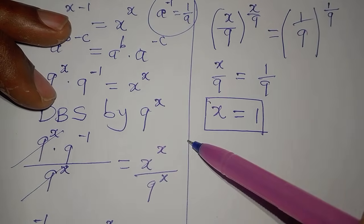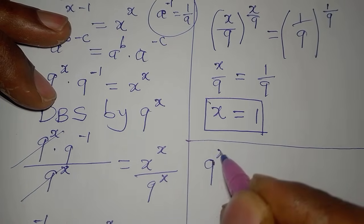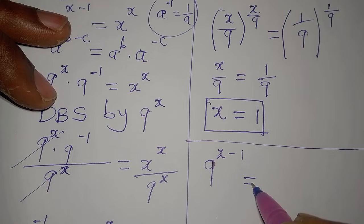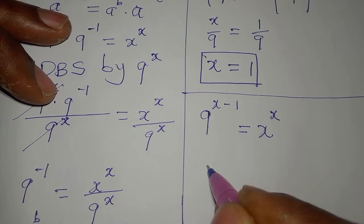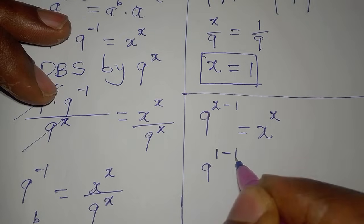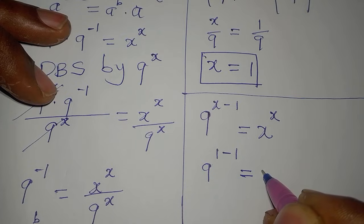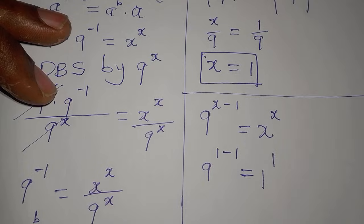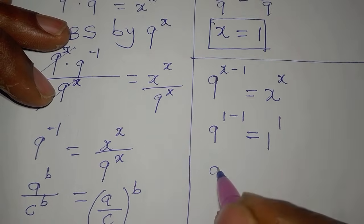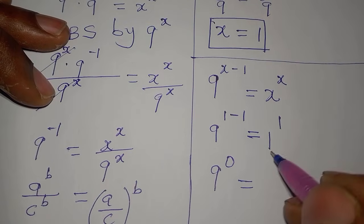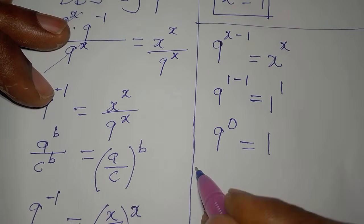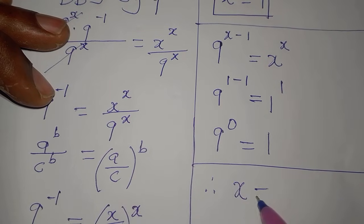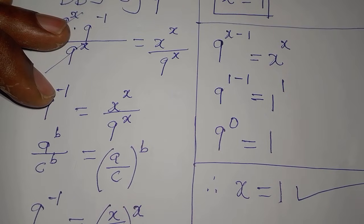Before the final conclusion, let's verify. The original equation is 9 to the power of x minus 1 equals x to the power of x. Substituting x equals 1: 9 to the power of 1 minus 1 equals 1 to the power of 1, which gives 9 to the power of 0 equals 1. Since any number to the power of 0 is 1, this is confirmed. Therefore x equals 1.